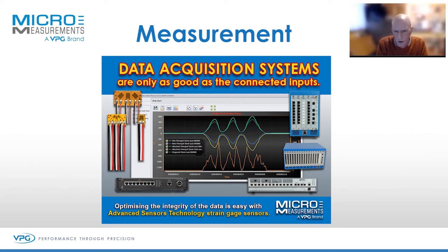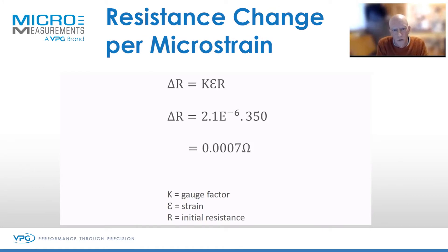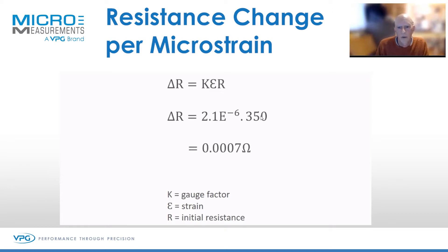Moving on to taking measurements from strain gauges, the first thing we need to know — beyond the gauge factor — is what that means in terms of measurement. We do a simple rearrangement of the gauge factor formula: the change of resistance equals the gauge factor times the strain times the starting resistance. With a gauge factor of two and a strain of one microstrain (0.000001), times 350 ohms.